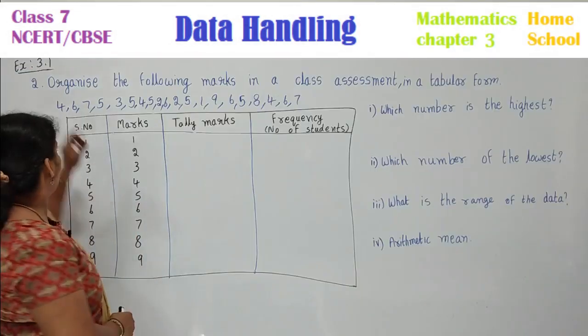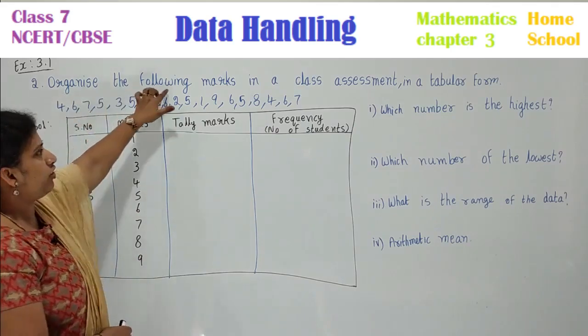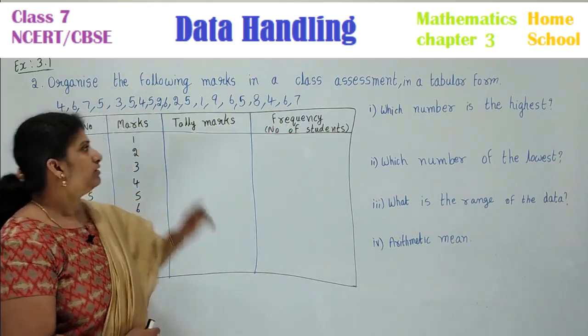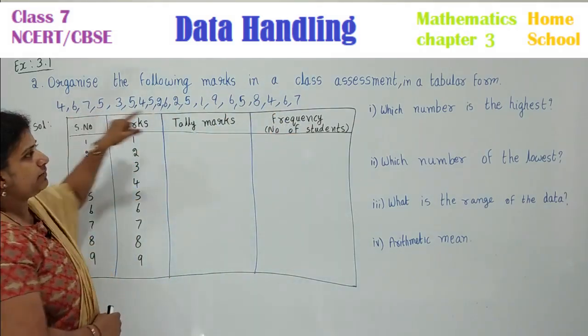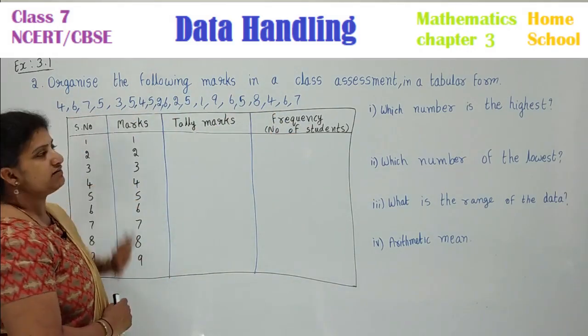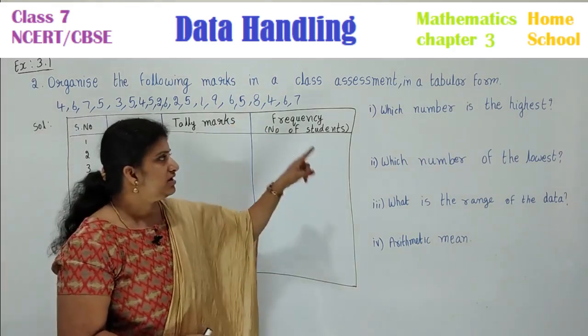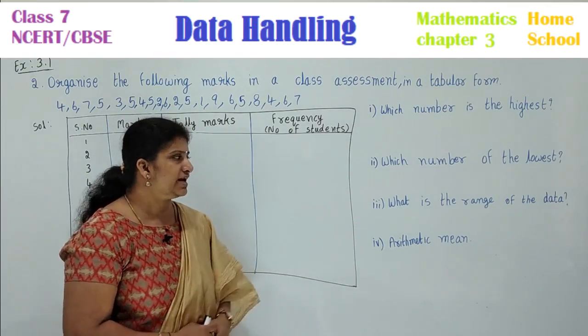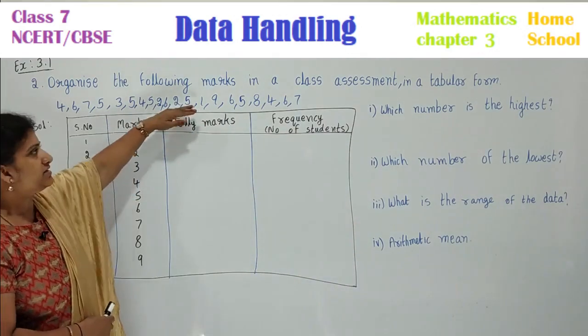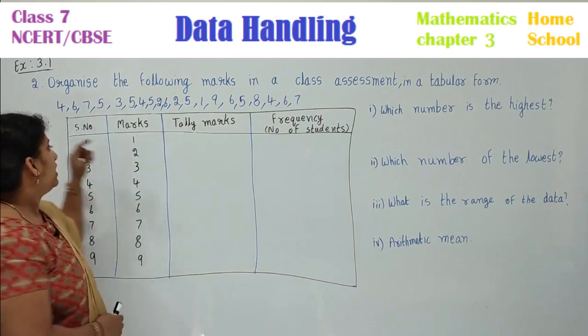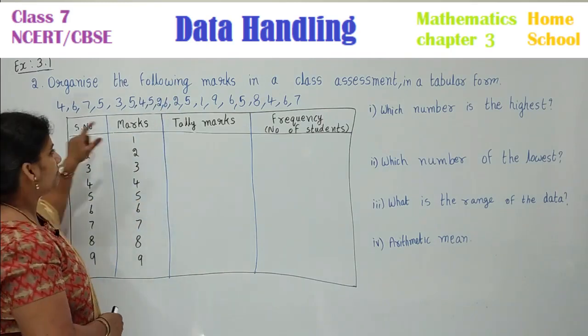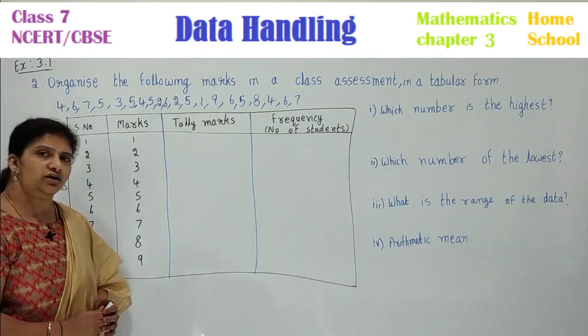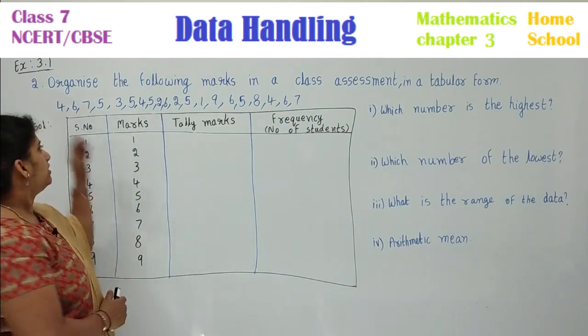Let's see the second problem. Organize the following marks in a class assessment in a tabular form. Some number of students' marks were given here and they asked you 4 questions. Which number is the highest? Which number is the lowest? What is the range of the data and arithmetic mean? Represent the score in a tabular column. I have taken 4 columns: serial number, marks, tally marks, frequency (number of students).